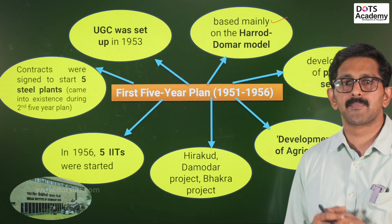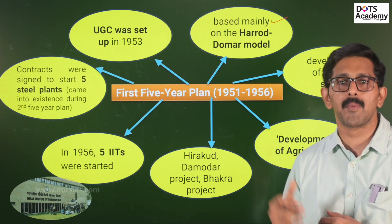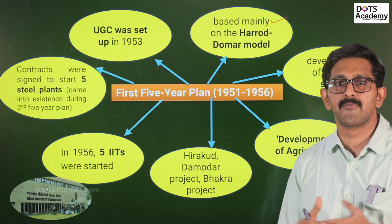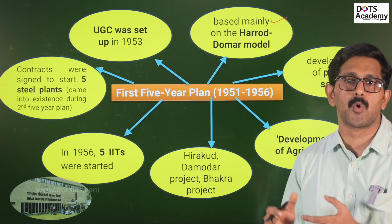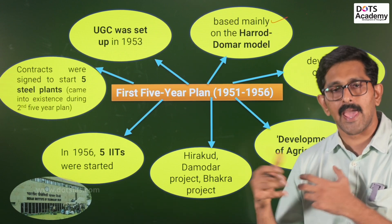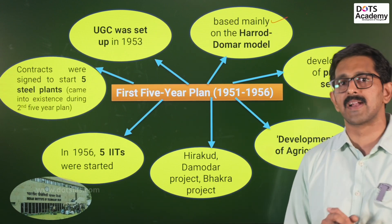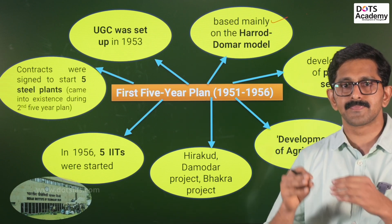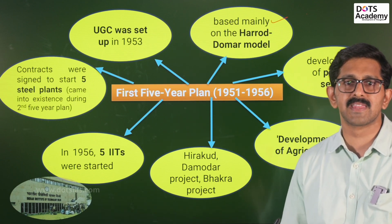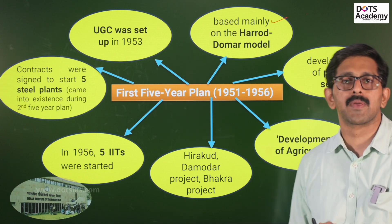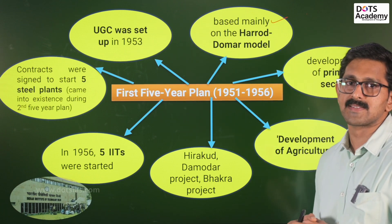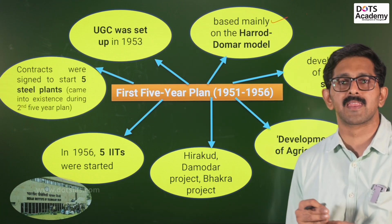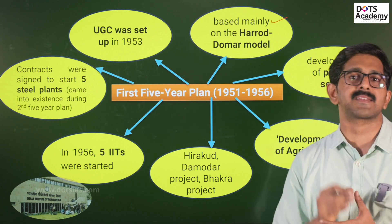The first five-year plan from 1951 to 1956 was designed based on the Harrod-Domar model. The first five-year plan's main area of focus was primary sector development.